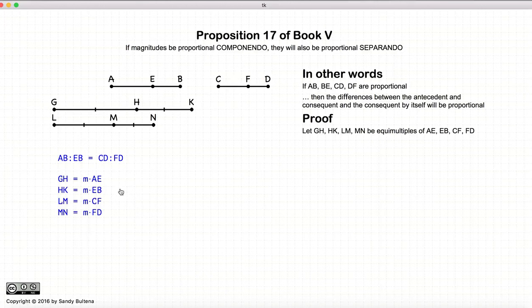So we actually are having a set of four magnitudes that are equal multiples to another set of four magnitudes. Now we're creating two new magnitudes, KO and NP, which are a different equal multiple of EB and FD.